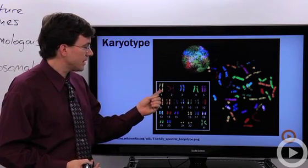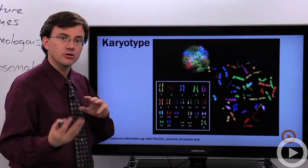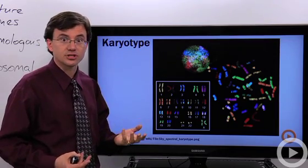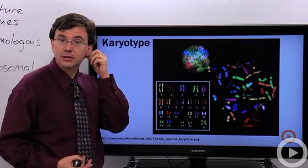This one may be from mommy, that one from daddy, both carrying your mom and dad's versions of say the gene that determines whether or not you can roll your tongue or the shape of your earlobe.